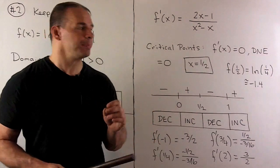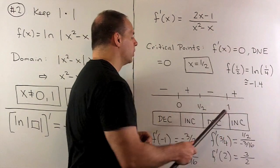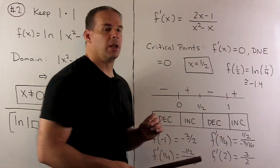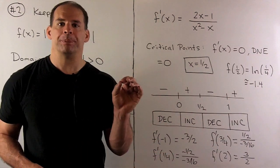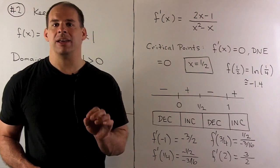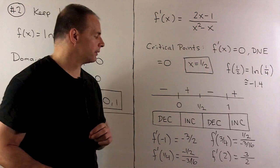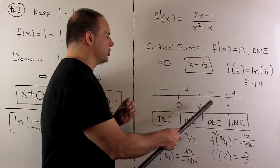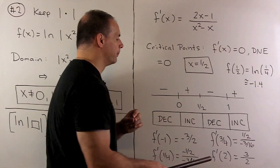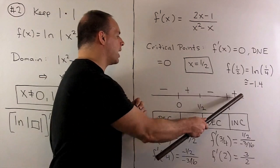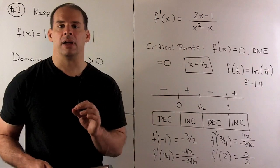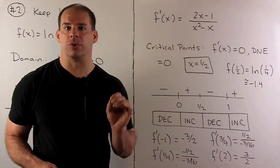For increasing and decreasing, we take the real line, break it up at the critical point x = 1/2 and the two vertical asymptotes at x = 0 and x = 1, then check a point in each region. Testing x = -1, 1/4, 3/4, and 2, the signs on f'(x) are: negative, positive, negative, positive. So the function is decreasing, increasing, decreasing, increasing on those respective intervals.